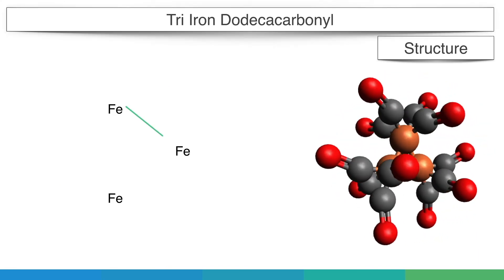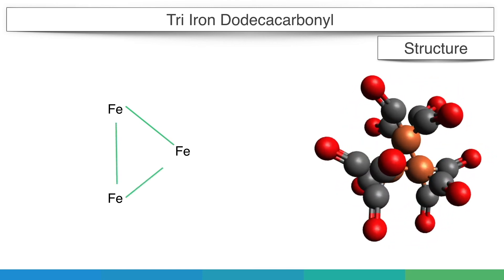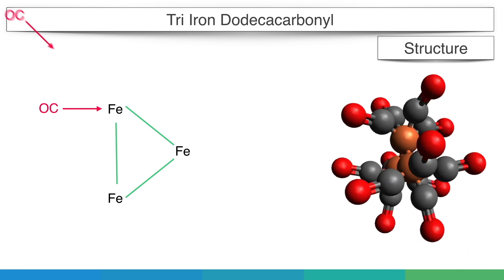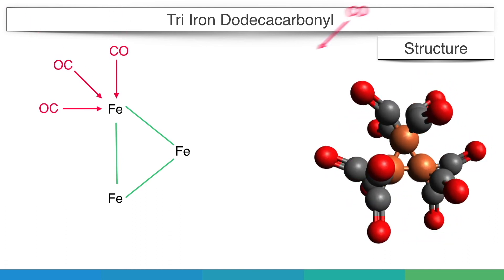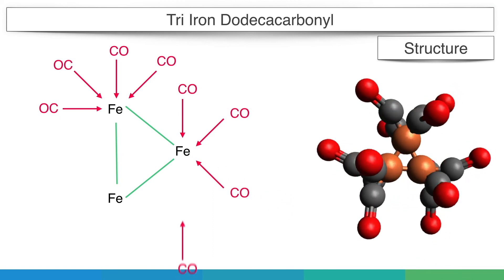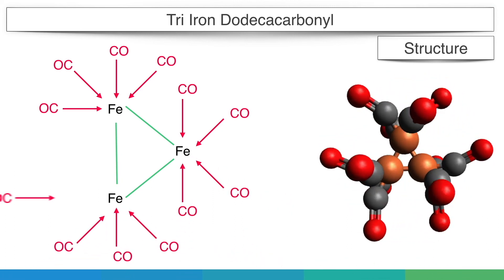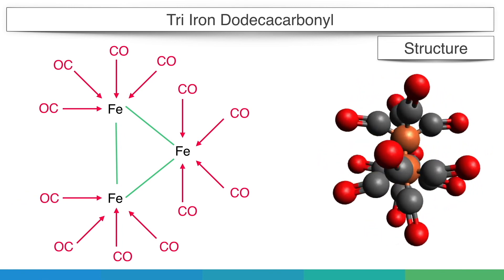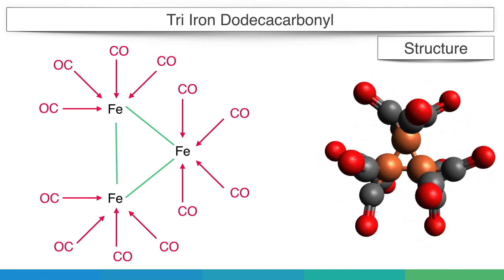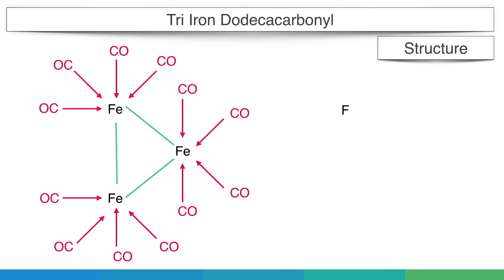Now let's see the structure of tri-iron dodecacarbonyl. In tri-iron dodecacarbonyl, there are three iron atoms and they make a triangle, and four carbonyl groups are attached to each iron atom. But later, Mossbauer evidence proved that two carbonyl groups are making bridges between the iron atoms.